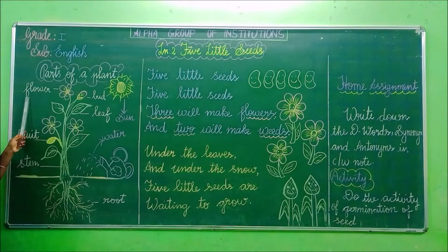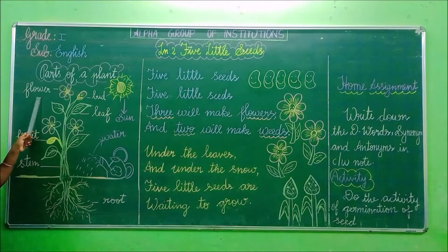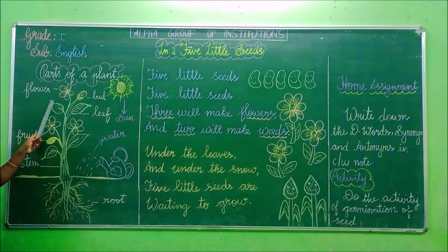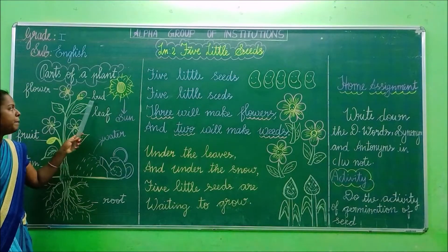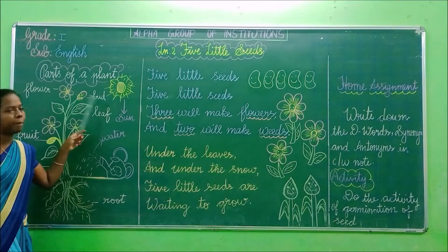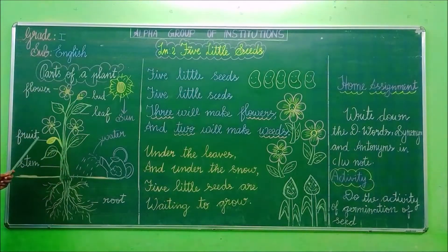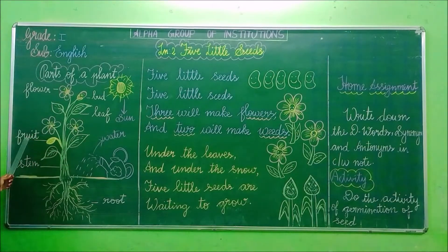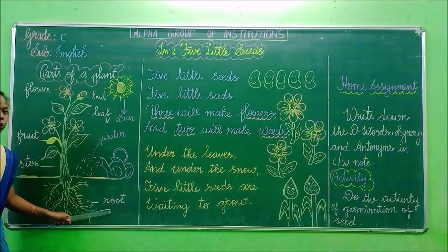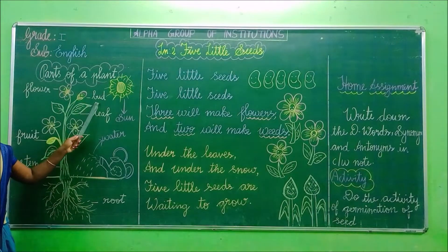Flower. F-L-O-W-E-R. Flower. The next one: Bud. B-U-D. Bud. So there are five parts of a plant: leaf, flower, fruit, stem, and root. And the next one is bud.